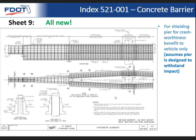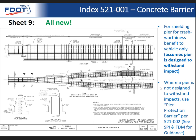Now we're getting into shielding of the pier. This, as opposed to pier protection barrier — the next index — is shielding a pier only for the crash-worthiness benefit of the vehicle. The assumption is that the pier is designed to withstand the impact of larger trucks, so you're not really trying to protect the pier itself — you can use this index sheet. When the pier is not designed to withstand the impact, you want to use pier protection barrier in index 521-002. Guidance on this begins in the Standard Plans Instructions and the FDOT Design Manual explains the process further for deciding whether you need pier protection barrier.